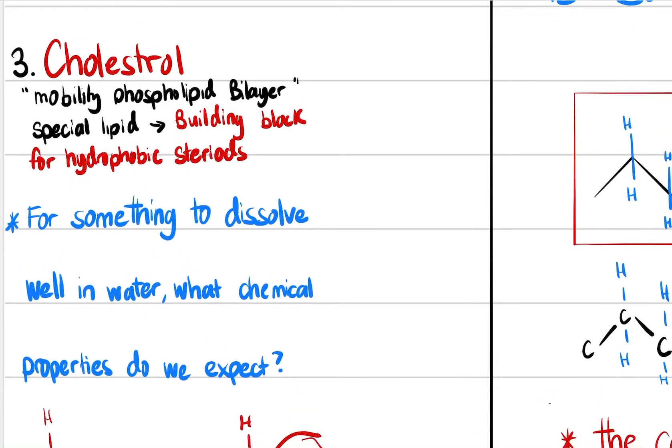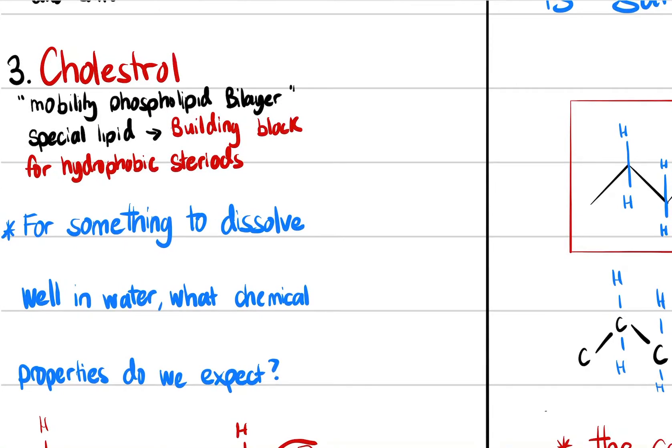To get a better understanding, I have a question. For something to dissolve well in water, what chemical properties do we expect? When something is said to be well dissolved in water, that is a reference to hydrophilic. So the question is essentially asking, if we went down to a molecular chemistry perspective, what is the chemistry behind the lipid?